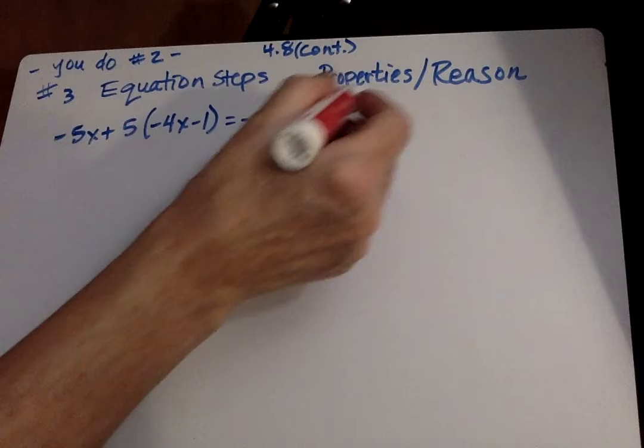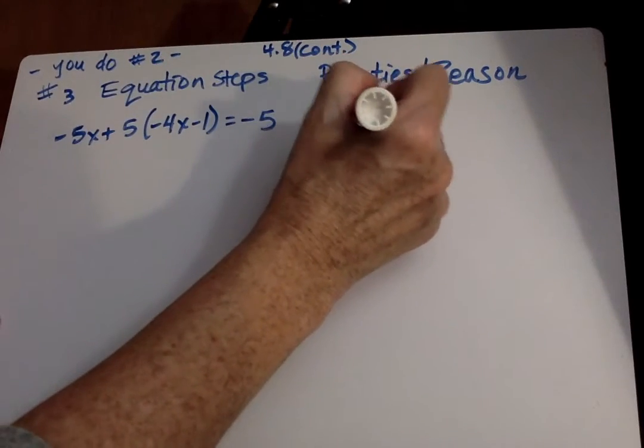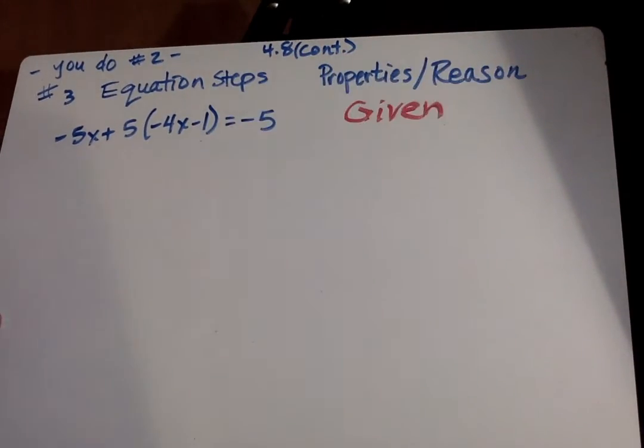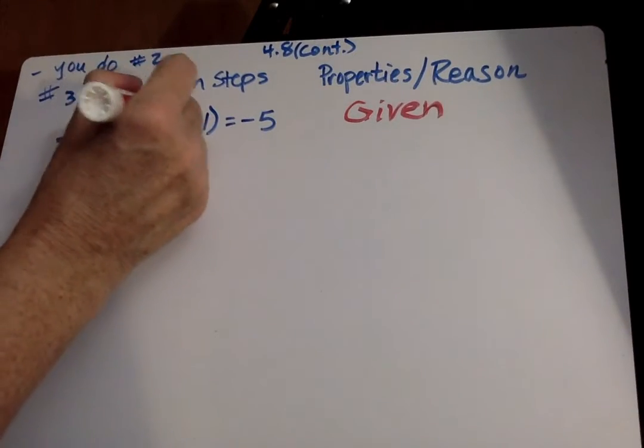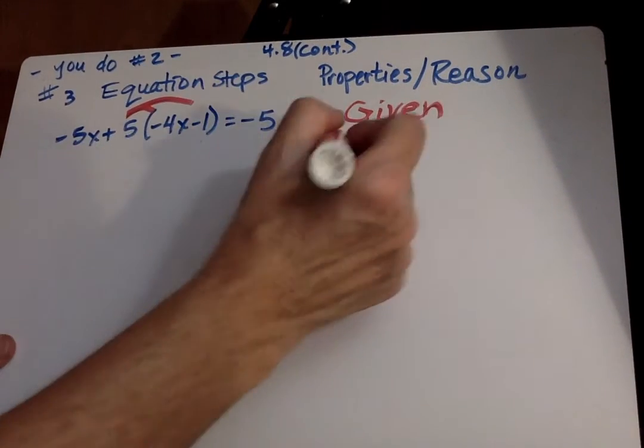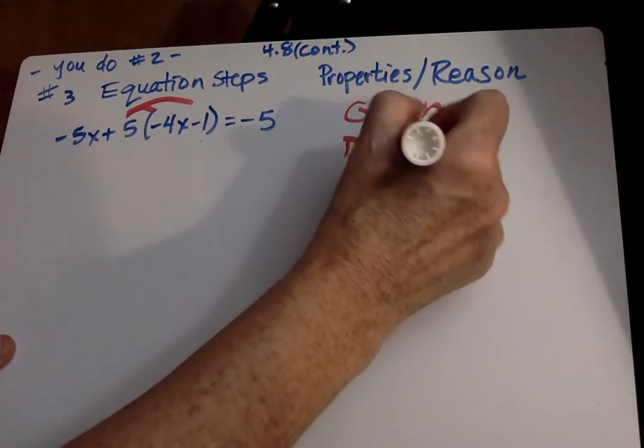Again, we're given an equation. What's the property of reason? Given. And again, looks like we need to use the distributive property. So I can put the distributive property.